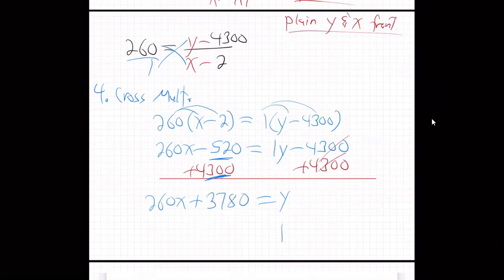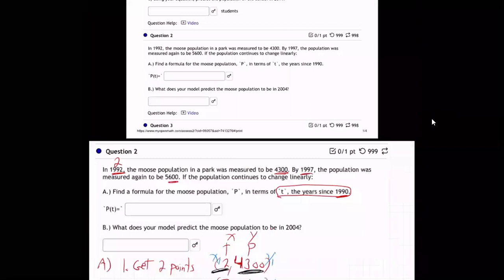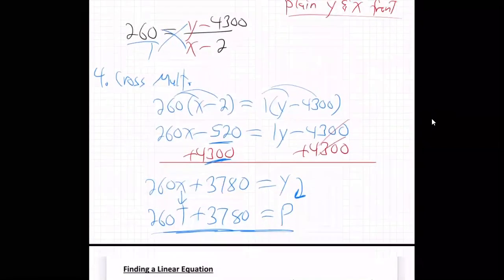So that's the population is 260T plus 3780. Remember Y, Y is the population. X is really T. So there's the population of moose two years after 1990. So yeah, that's how they want it. 260T plus 3780.